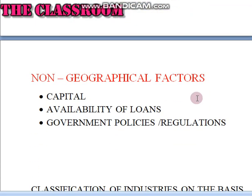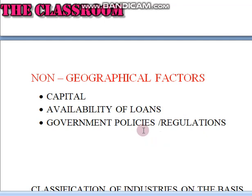Let us see the non-geographical factors. First, capital — which we have already seen. Then, availability of loans: in most cases it is not possible to start an industry with enough capital in hand, so investors seek loans to start industries. Thus, the organizational setup which provides loans and insurance is required. Government policies and regulations are another important factor that influences industry location.